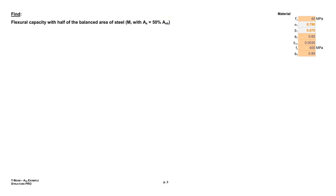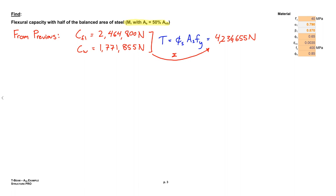Alright, so that's obviously way above our cracking moment, and it's a substantial moment that this T-beam can resist. But the story is not over. Now we want to find the flexural capacity with half of the balanced steel area. Alright, so this part is going to be a bit quicker. From previous we know that CFL and CW, we'd solved for those values, and we know that T would have to be equal to those values because sum of all the force in the X equals zero, right? So we could just divide that T in half to get our new T, right, because we're going to have half the steel area.